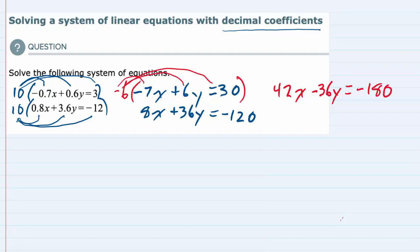And then I'm going to bring this second equation over to line it up below it. That's 8x + 36y = -120.